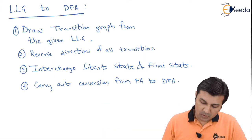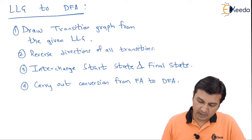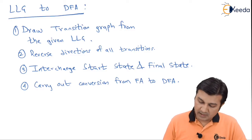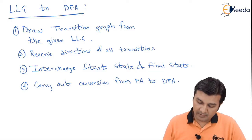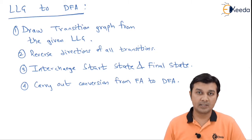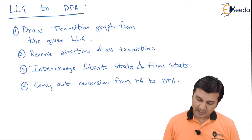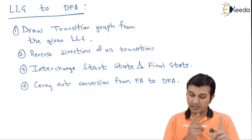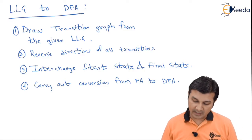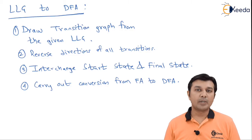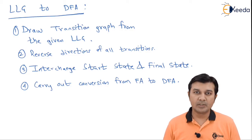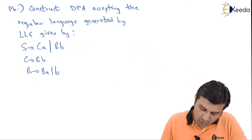So friends, the procedure for conversion of a LLG to DFA is as follows. Point 1 says draw transition graph from the given left linear grammar. Going ahead, it says reverse the direction on all the transitions, interchange the start state and the final state, and carry out the conversion from the finite automata to deterministic finite automata. Seems quite simple, let us do it with the help of a problem.